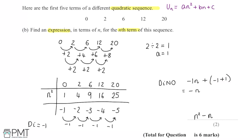For the mark scheme on this part: the first mark is for a correct general method leading to the conclusion that a equals 1, recognising the n squared term. The second mark is for the correct final answer of n squared minus n.